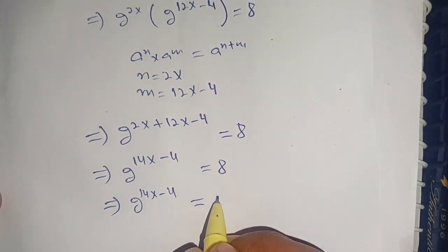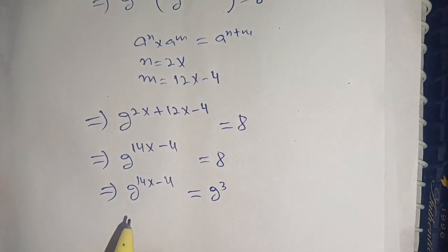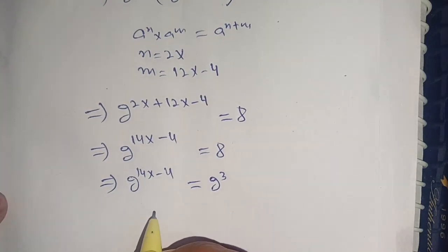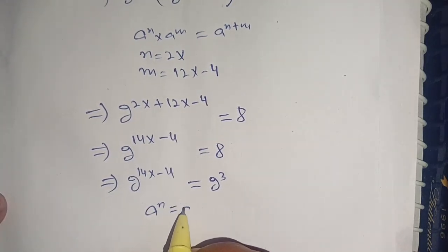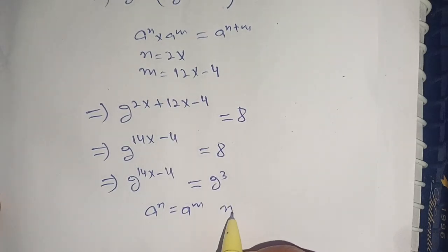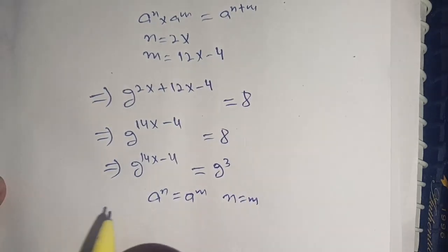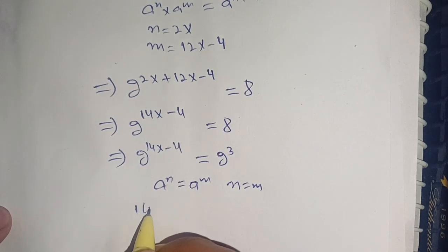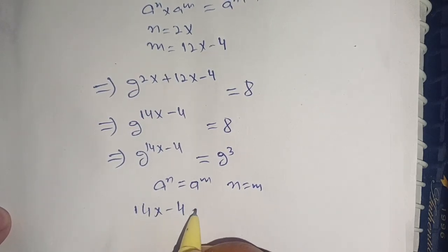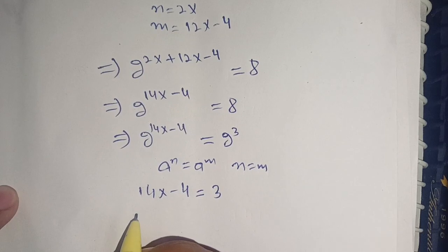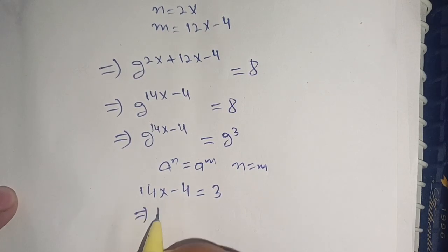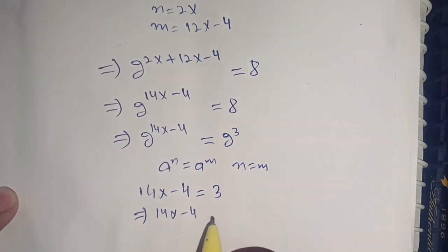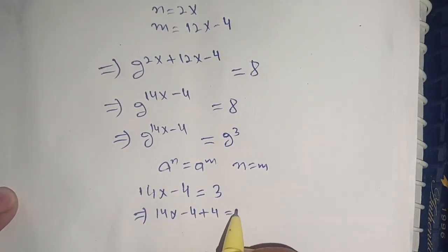8 can be written as 2^3. So 2^(14x - 4) = 2^3. Since the bases are equal, we compare the exponents: 14x - 4 = 3.